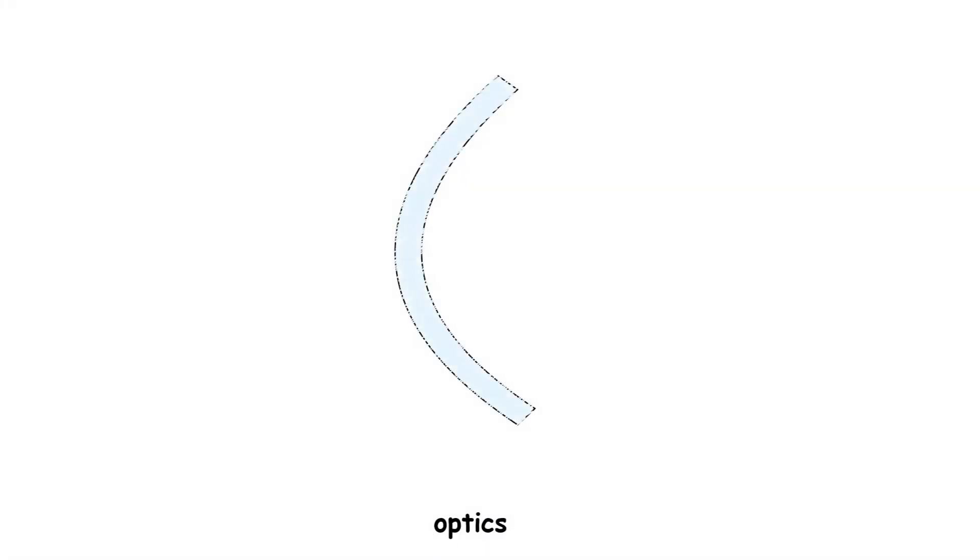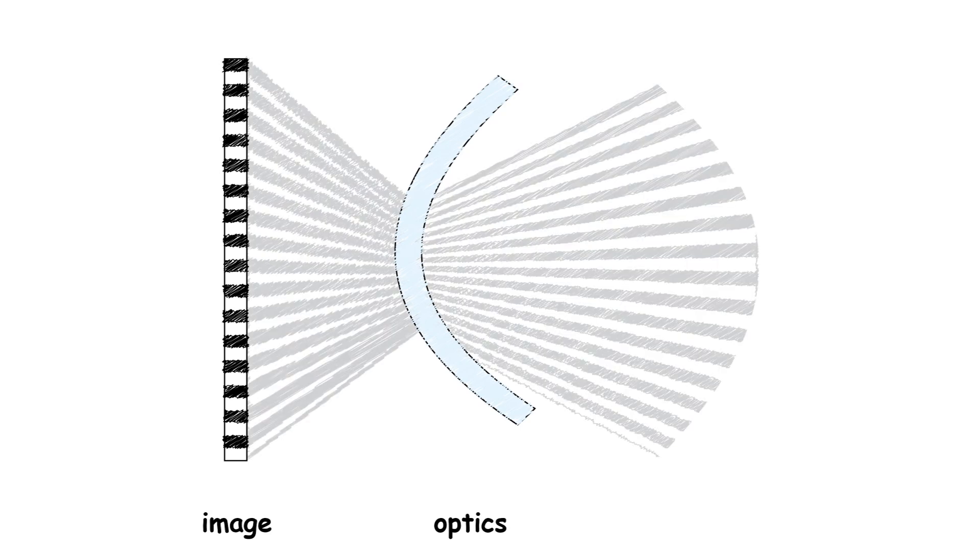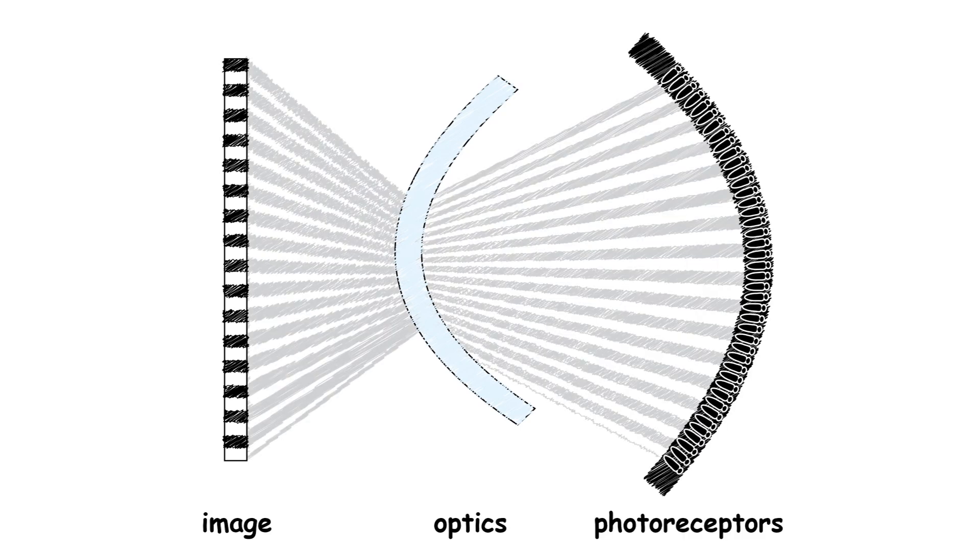Eyes are really just like cameras. The optics focus an image of the outside world onto an array of sensors, the photoreceptors. Because the image has darker and brighter areas, some photoreceptors will absorb more photons.